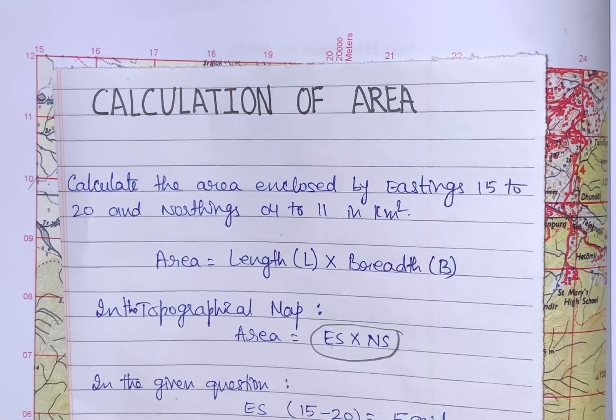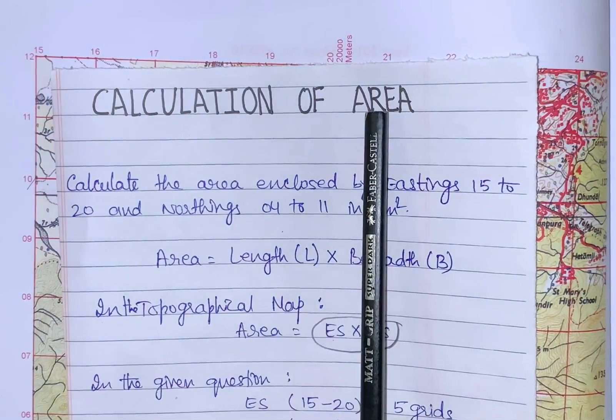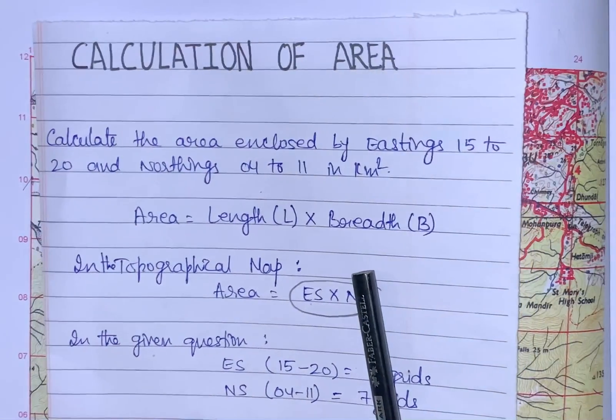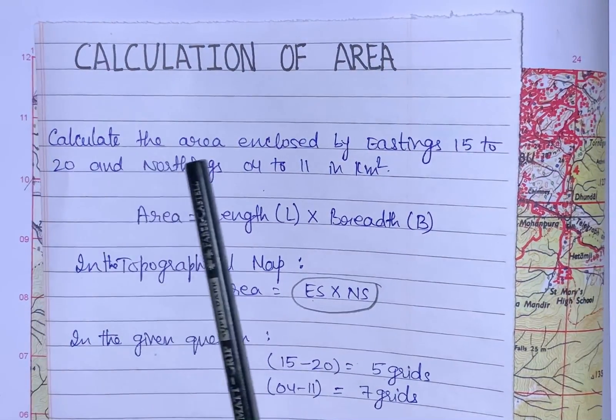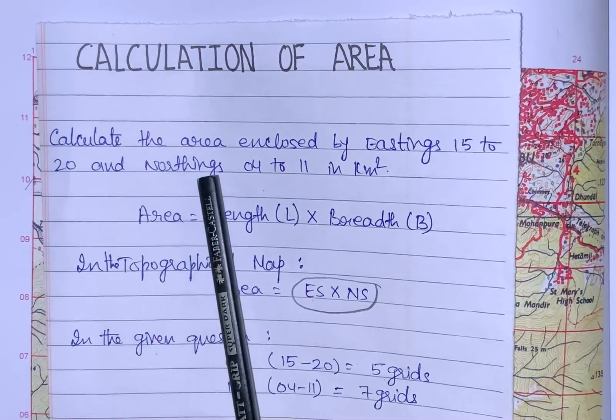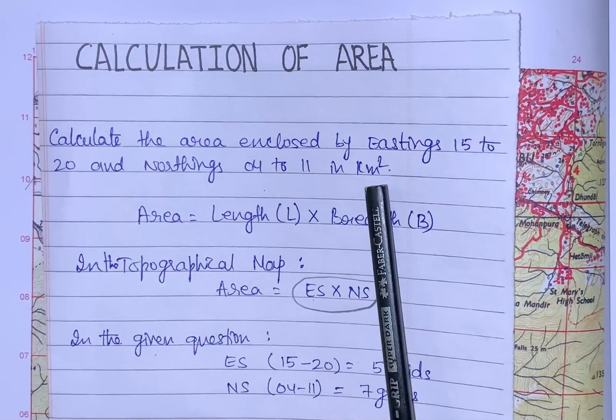Hello all. In today's video, I will show you how to calculate area in a topographical map. I have taken one question for you: Calculate the area enclosed by eastings 15 to 20 and northings 04 to 11 in kilometers square.